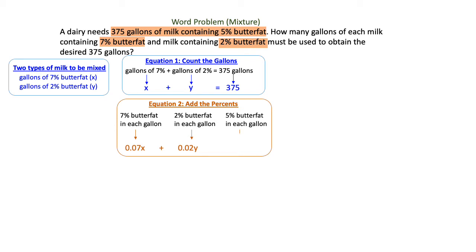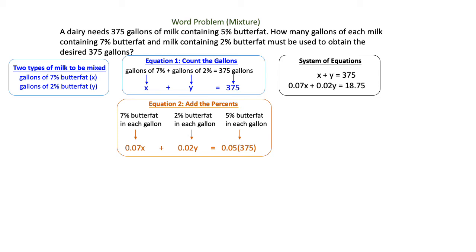And our total, our 375 gallons, actually is going to have a 5% butterfat applied to that. So we're going to write that as a multiplication of 0.05 times 375. So our system of equations is X plus Y equals 375. That's just plain gallons of milk. And the second one involves all of our percentages.